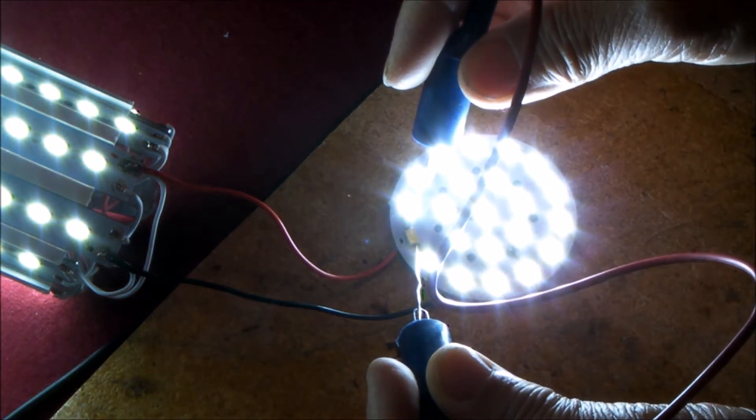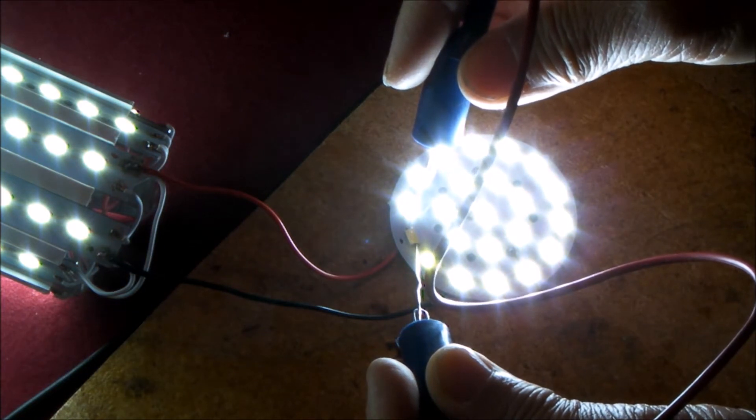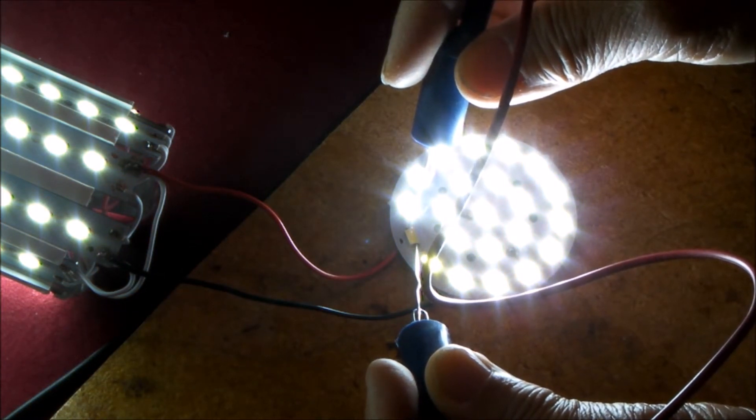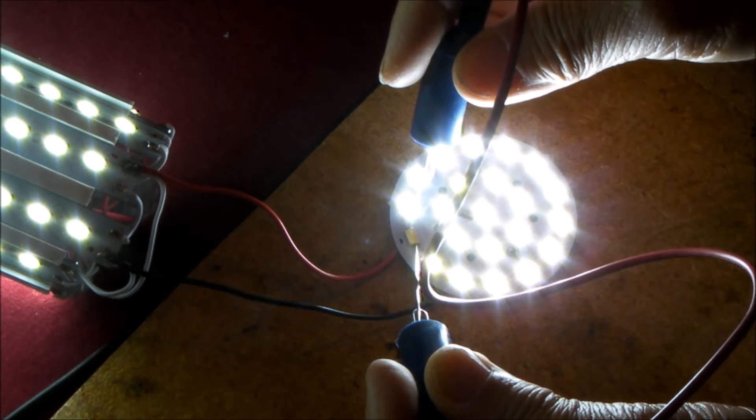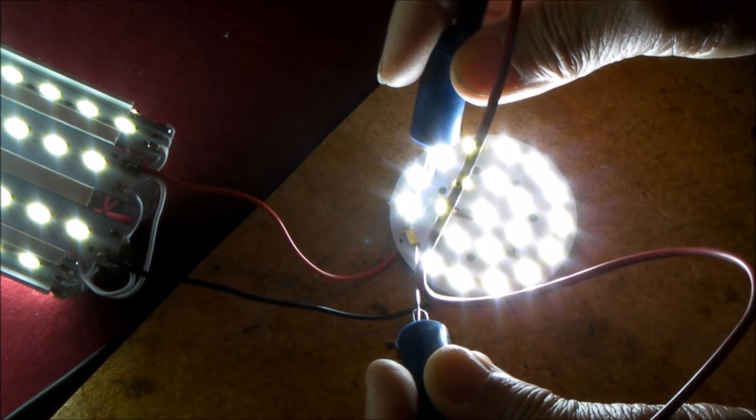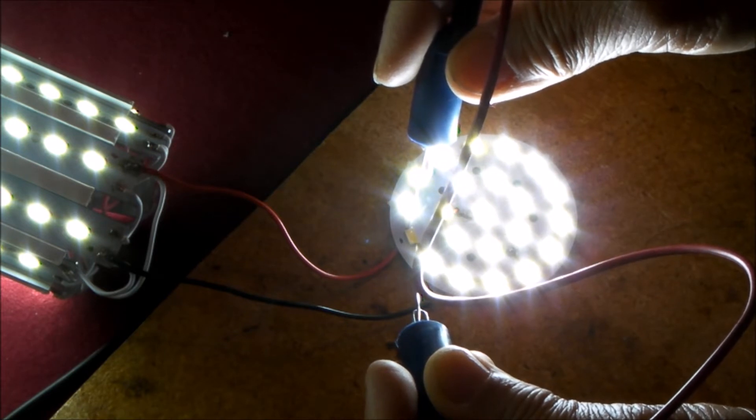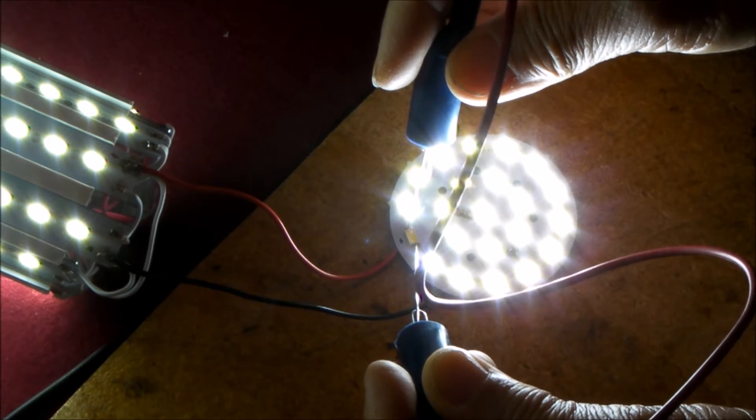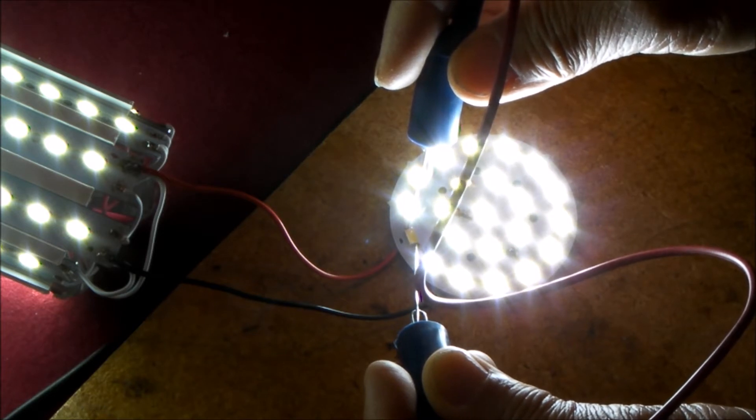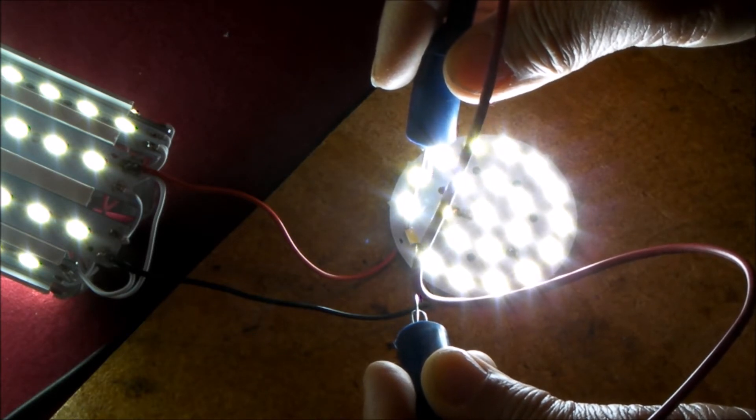So I have two solutions here. One, I could just remove the LED and solder a jumper across it and just short it, or just short out the LED with a jumper wire, or I can try to find a replacement LED to throw in there. I don't have any surface mount LEDs like this. I would imagine just removing one LED is not going to be that detrimental to the entire circuit.